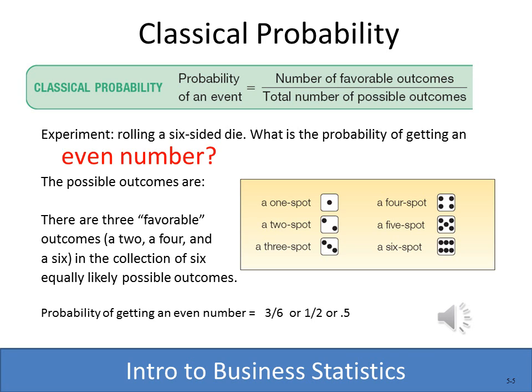The other important thing to understand about classical probability is that each experiment is new — it doesn't matter what's happened in the past. Let's say you flipped a coin ten times and nine out of the ten times you got tails. With classical probability, it doesn't matter. There is still a one in two chance of getting tails or heads. With classical probability, we only look at what could happen as a result of this one experiment we're doing right now.